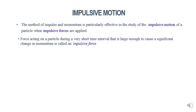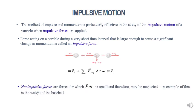The method of impulse and momentum is particularly effective in the study of impulsive motion, when very large forces — called impulsive forces — are applied for a very short time interval delta T. When the average value of the force is very large and the resulting impulse is large enough to change the sense of motion, the impulse and momentum principle for impulsive motion becomes: linear momentum at T1 plus impulse of average forces equals linear momentum at T2. We neglect any force that is not an impulsive force because the corresponding impulse of the average non-impulsive forces is very small.